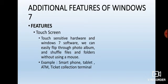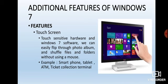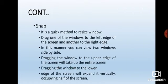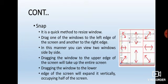Examples of touch screen devices include smartphones, tablets, ATMs, and ticket collection terminals. Now the second feature is Snap. Snap is a quick method to resize the window. If you want to resize — minimize or maximize — a window, you select the window and then use the resize arrows available at the corners and edges.